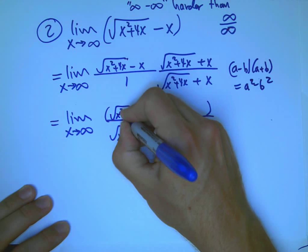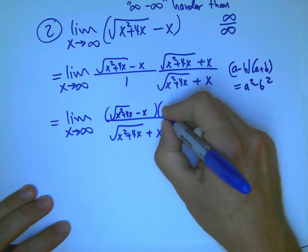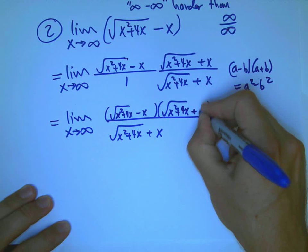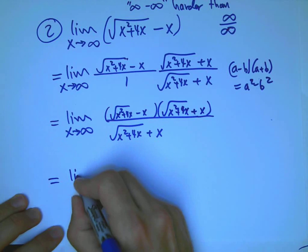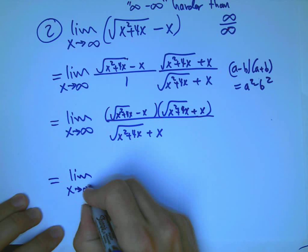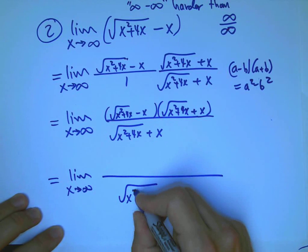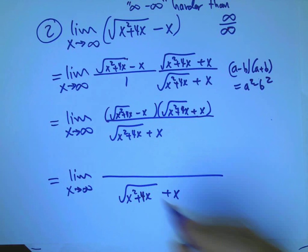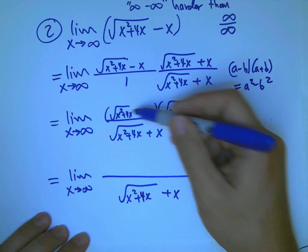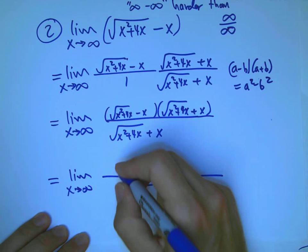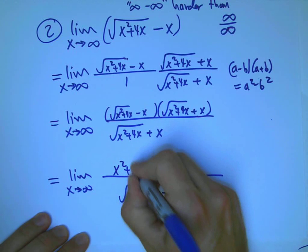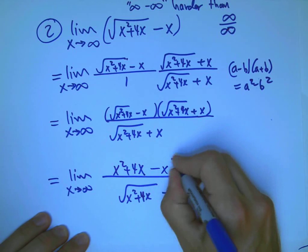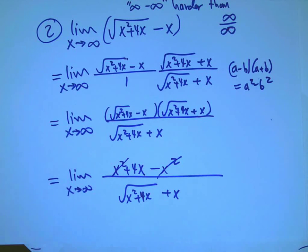So I'll just rewrite them. I shouldn't write so small. Okay, so now the bottom, I'm just going to leave that to hang out and hope that's not going to be a problem. We're going to address it with the methods we already have. So the square root of x squared plus 4x squared gives me x squared plus 4x. Minus x times x is minus x squared, and they cancel. That's probably a good thing.